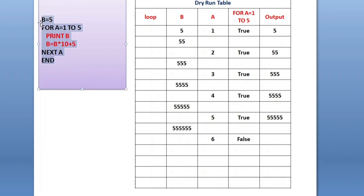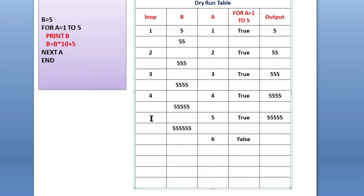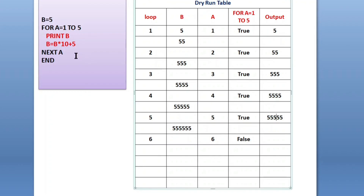So how many times was the loop executed? You can check the value of a: first time, second time, third time, fourth time, fifth time — true, true, true, true, true. And the sixth time it is false. That is our result. Let me show you by running this program in QBasic.